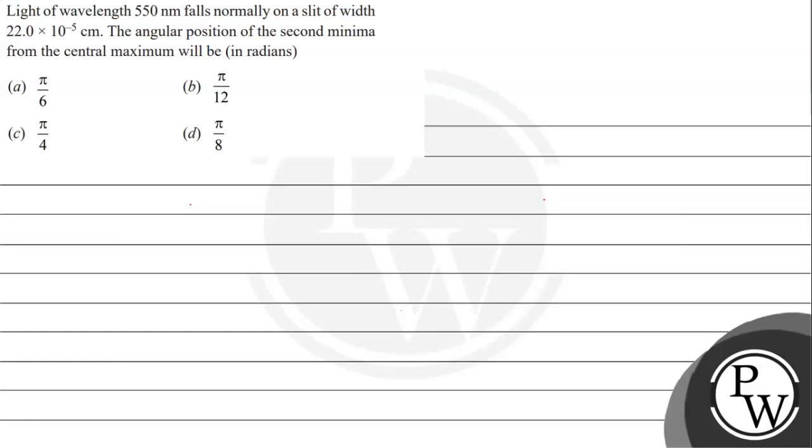Hello, let's get to the given question. The question says: light of wavelength 550 nanometers falls normally on a slit of width 22×10^-5 centimeters. The angular position of the second minimum from the central maximum will be in radians. Option a: π/6, option b: π/12, option c: π/4, option d: π/8.